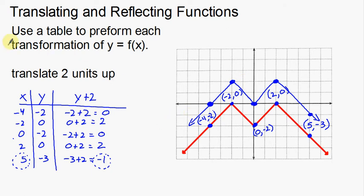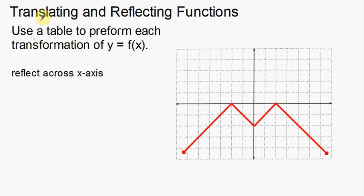Now let's go into a different example where I'm going to reflect across the x-axis. I'm going to take this exact same function and reflect it across the x-axis. The first thing I need to do, just like last time, is find some points to use — the peaks and valleys, plus a point on each arm. I'm going to use the same points I used last time.